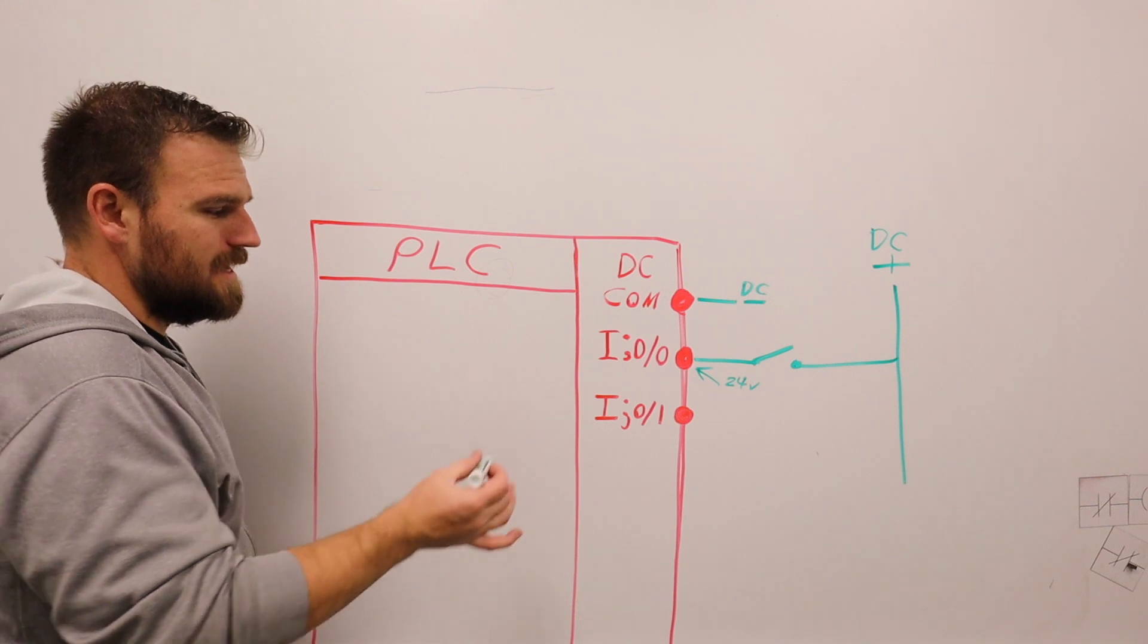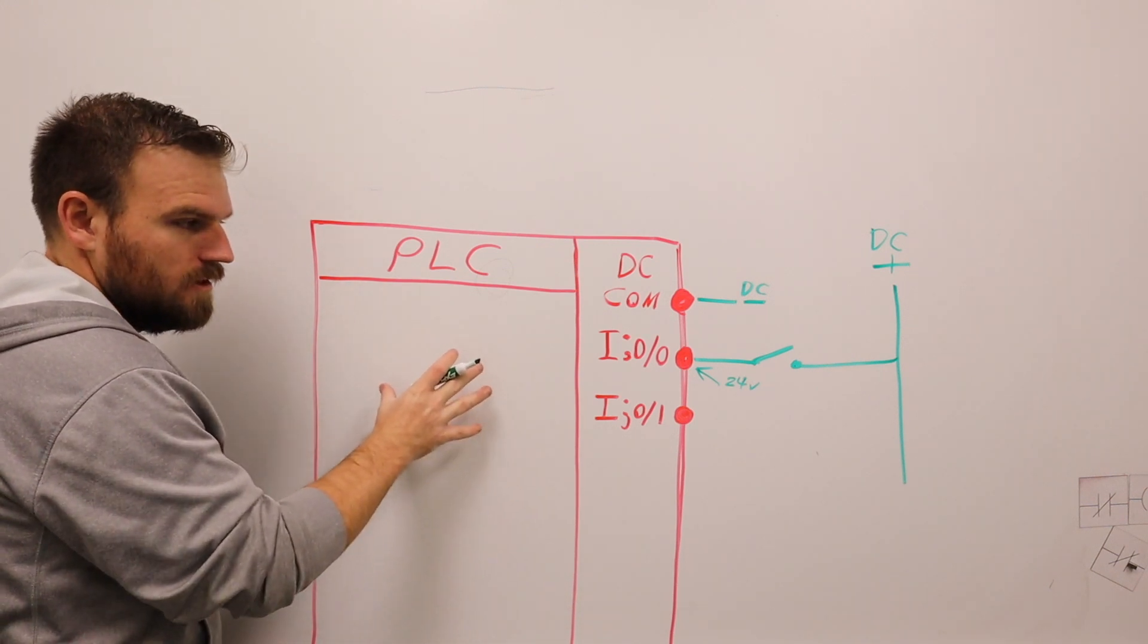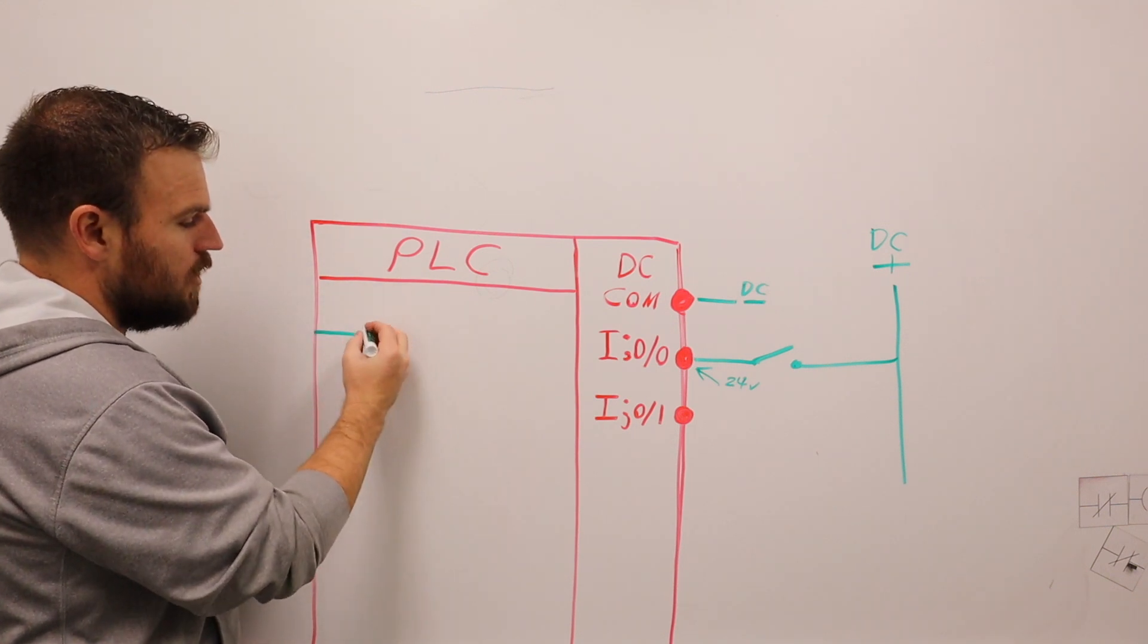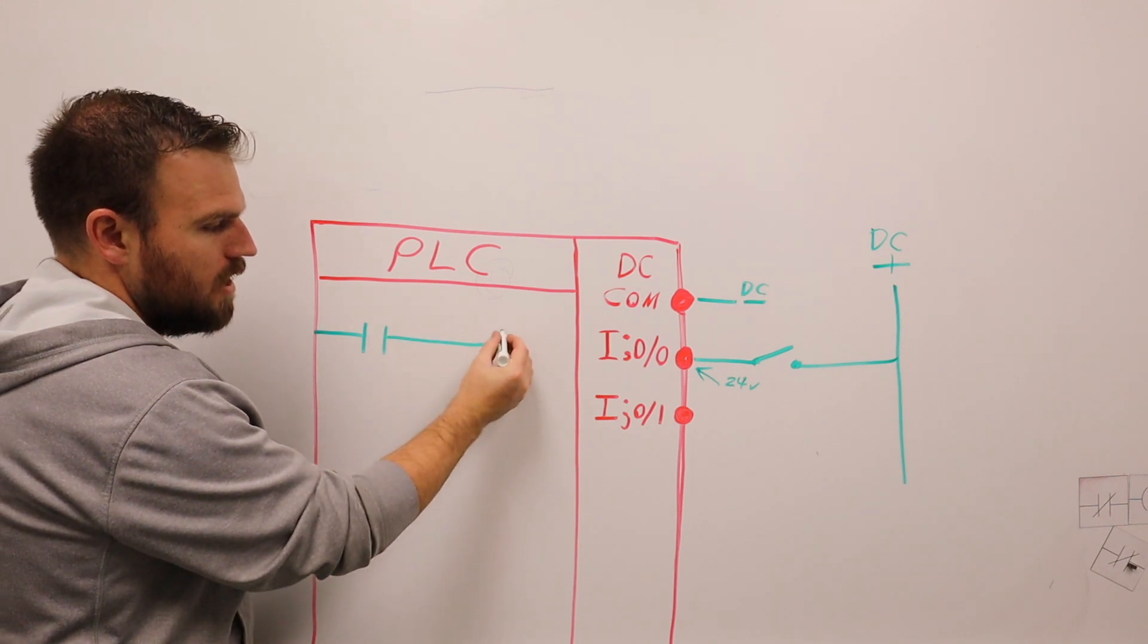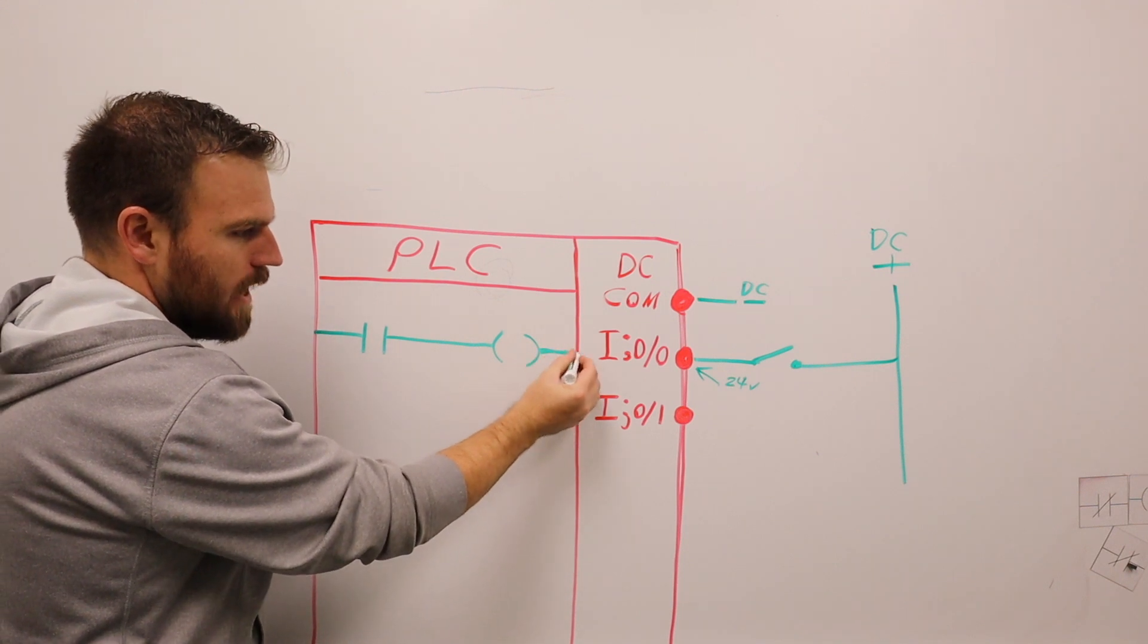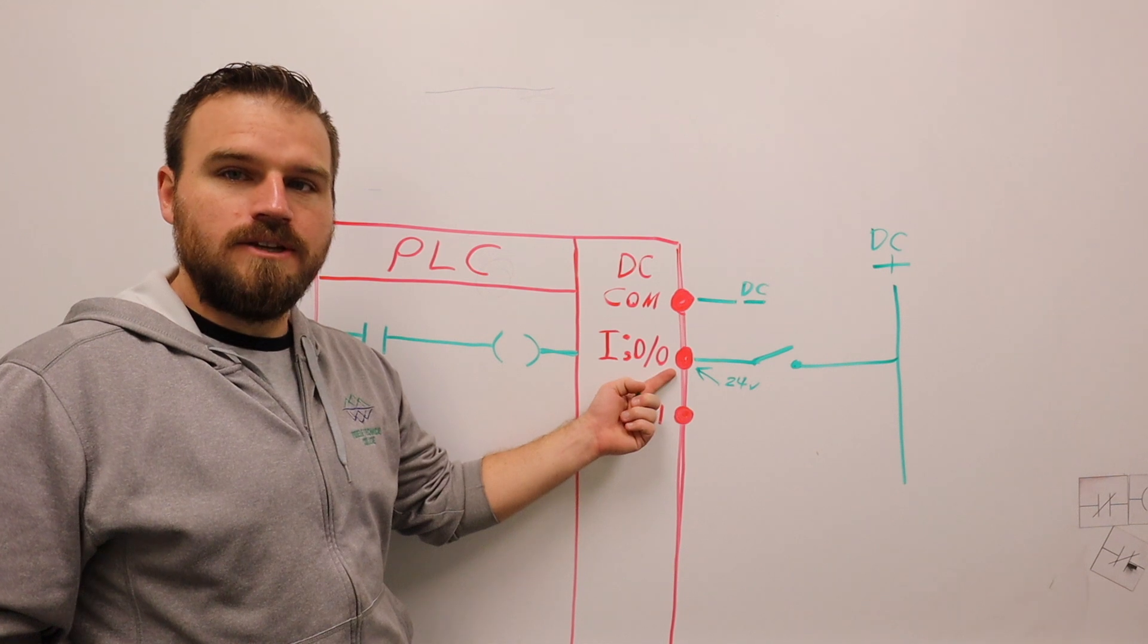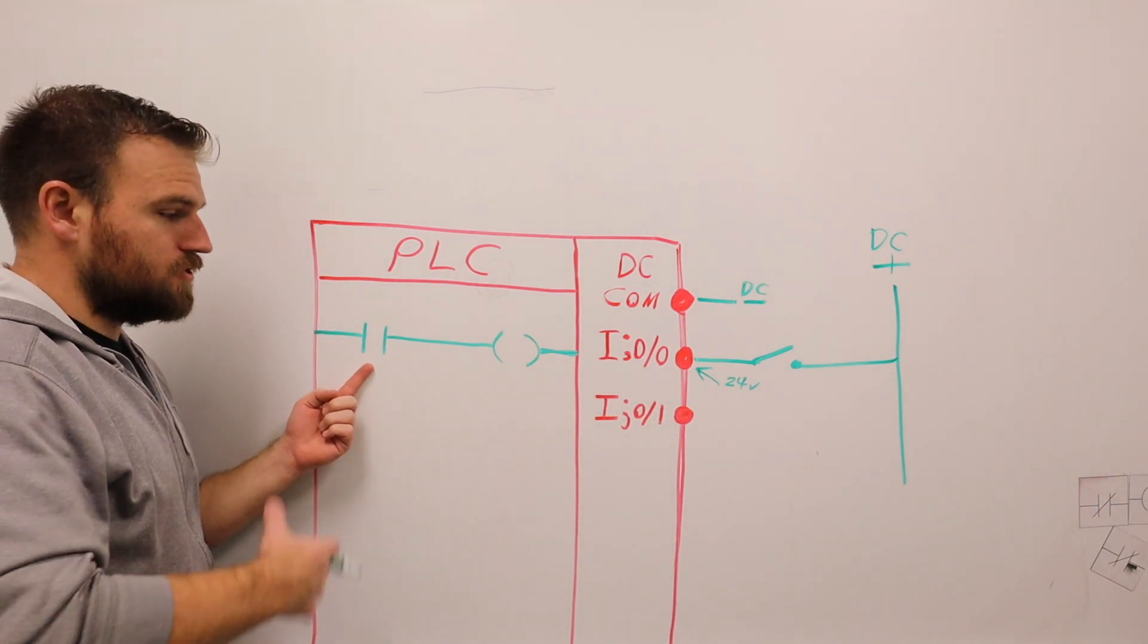Now how this is going to work is inside of our PLC, let's say now we're going to talk a little bit about the program. The program will have what they call instructions, and it's just going to look like a contact on a relay.